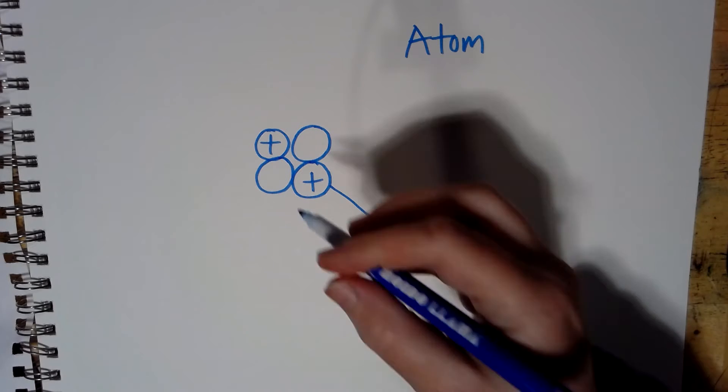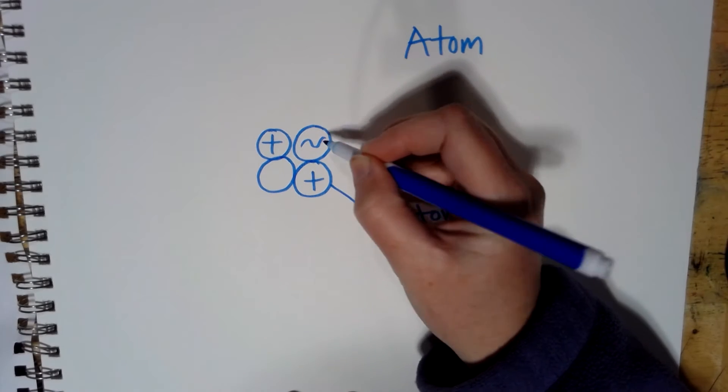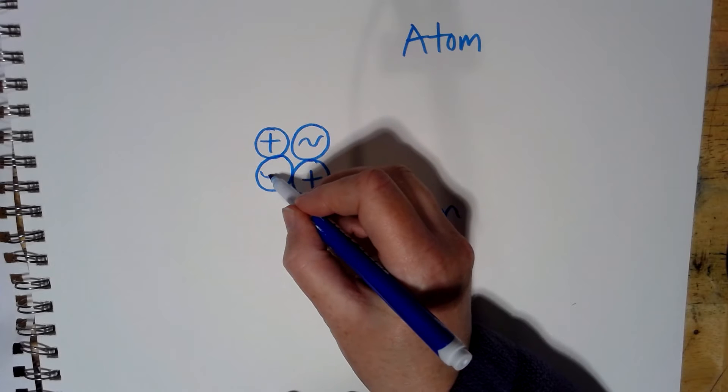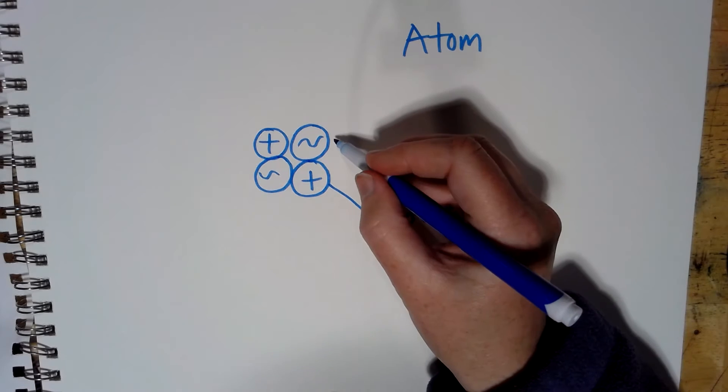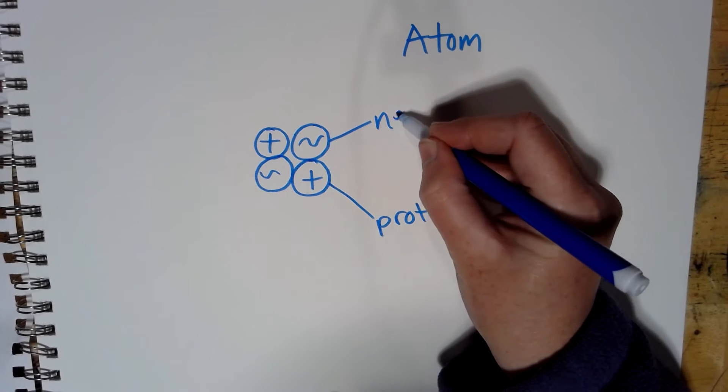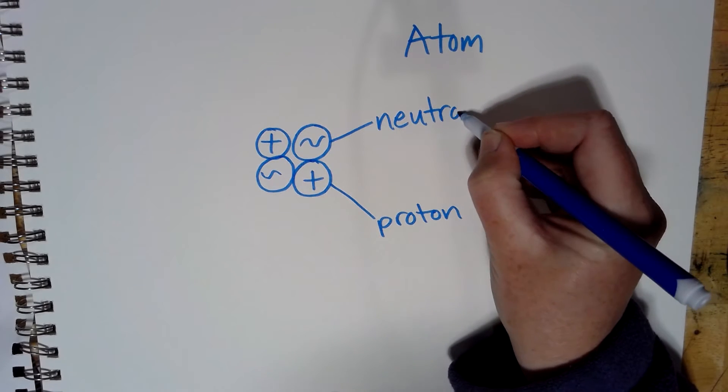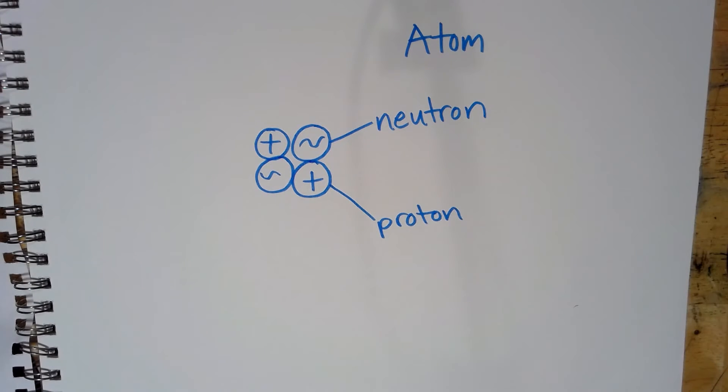The other part of the nucleus is made out of one that has no charge, and we're going to put a squiggly line for that. These are neutral particles. They don't have a charge, so they are called neutrons, like Jimmy Neutron. That's what he's named after.